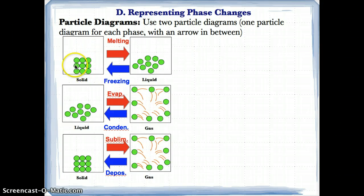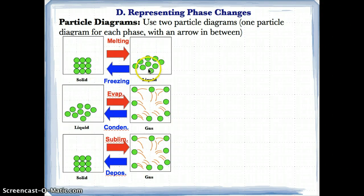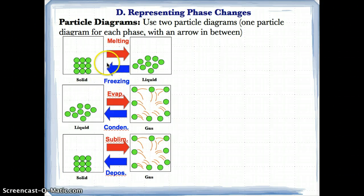For phase changes involving solids and liquids: solids are drawn like a cube, and liquids are drawn slightly more spaced out. Solids are cube-like; liquids are non-geometric. For the endothermic or heating-related phase change, melting goes from solid to liquid. We know this is endothermic because the distance between the particles is increasing — there's a heat gain and potential energy gain. For freezing, we have the reverse: from a liquid, which is slightly more spaced out, to a solid, which is closer together. Freezing is exothermic because potential energy decreases, heat is lost, and the distance between the particles decreases.